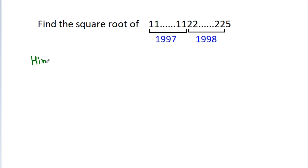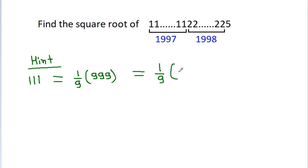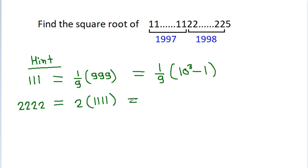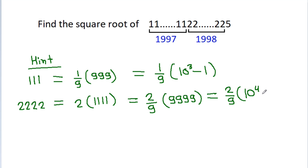The hint in this question: 1,1,1 can be written as 1/9 times 9,9,9, and that is 1/9 times (10³ - 1). Similarly, 2,2,2,2 can be written as 2 times 1,1,1,1, and that is 2/9 times 9,9,9,9, which equals 2/9 times (10⁴ - 1).